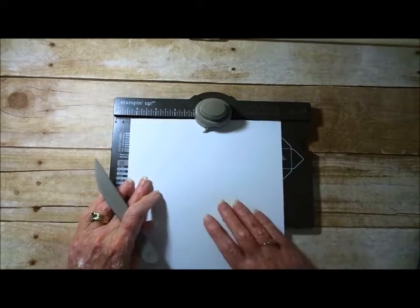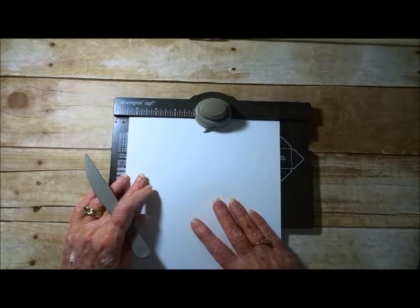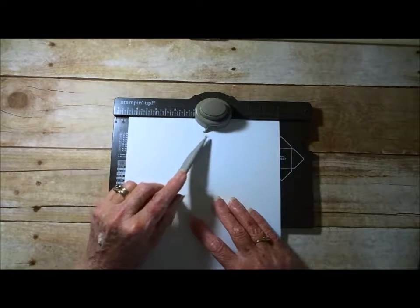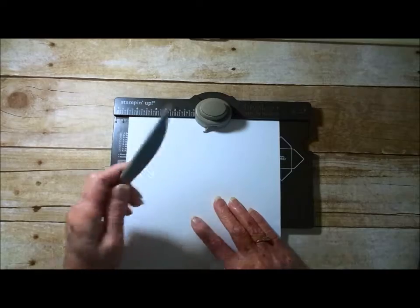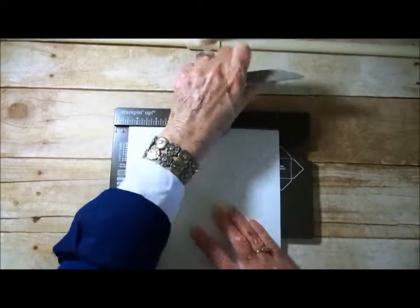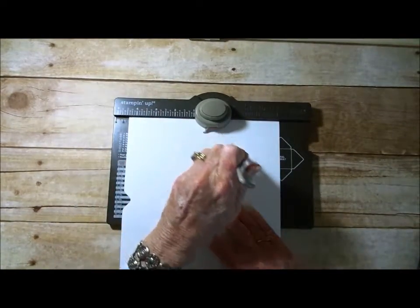You're going to take another turn. You're not going to go to the 3 and a half now. You're going to line your previous score line up with this gauge right here. Punch, and score.